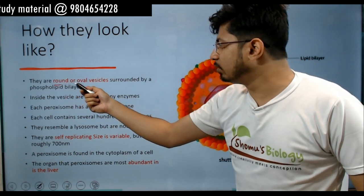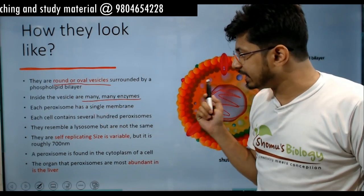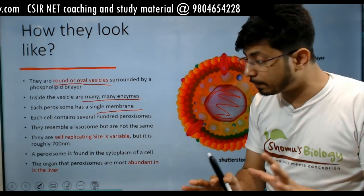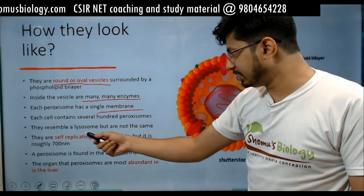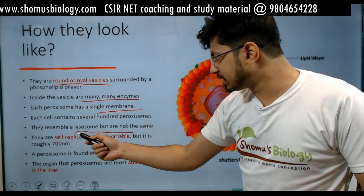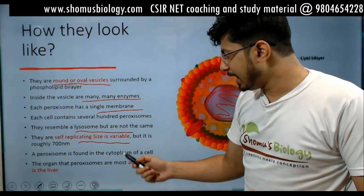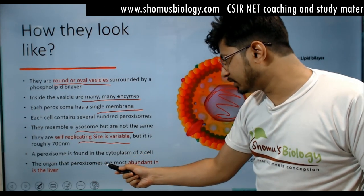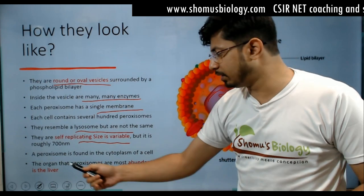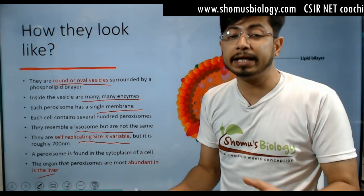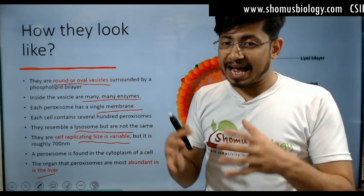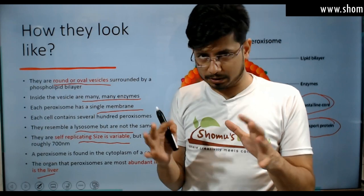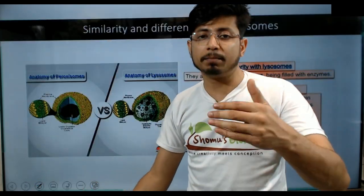Paroxysomes are round or oval vesicles. Inside, many many enzymes are present. Each paroxysome has a single membrane. Each cell contains several hundred paroxysomes, and they resemble lysosome structure. Their self-replicating size is variable, roughly 700 nanometers. The organ that paroxysomes are most abundant in is liver and kidney — particularly in the liver, where the metabolic process is high and where detoxification takes place in the body. The liver is the factory where detoxification of the body's toxins takes place. That's why it carries more paroxysomes.